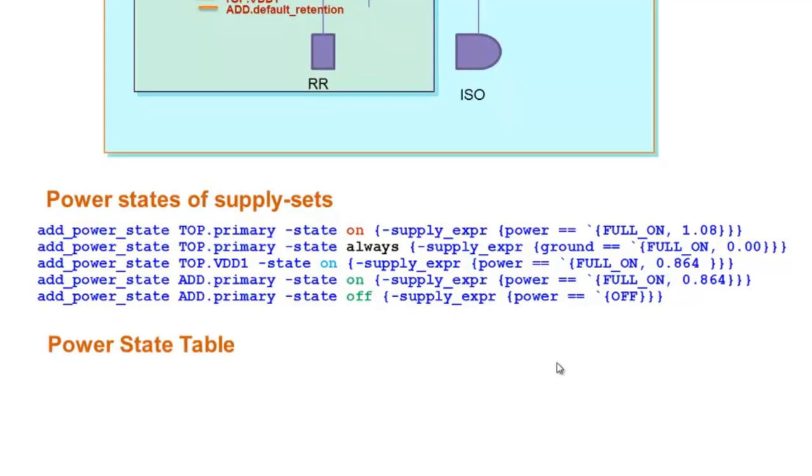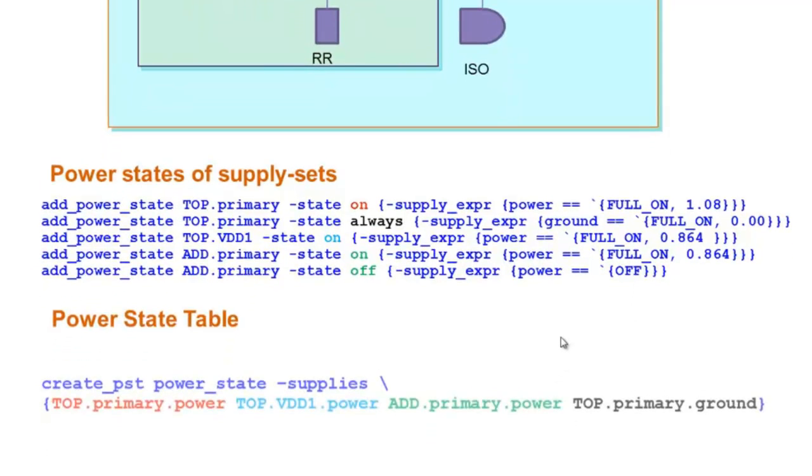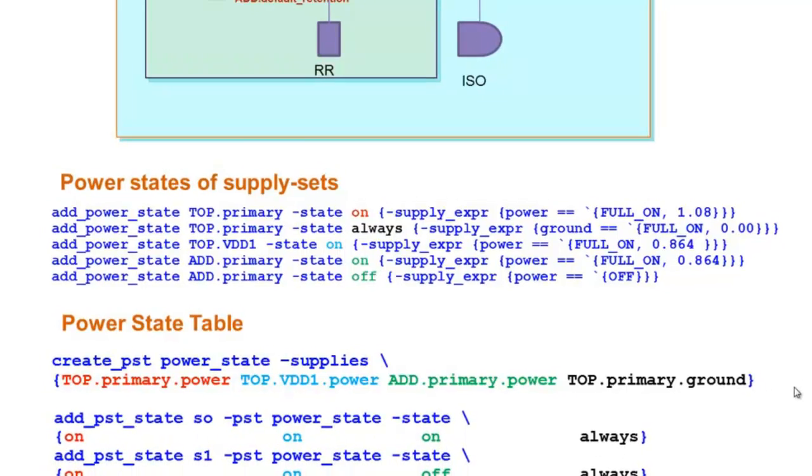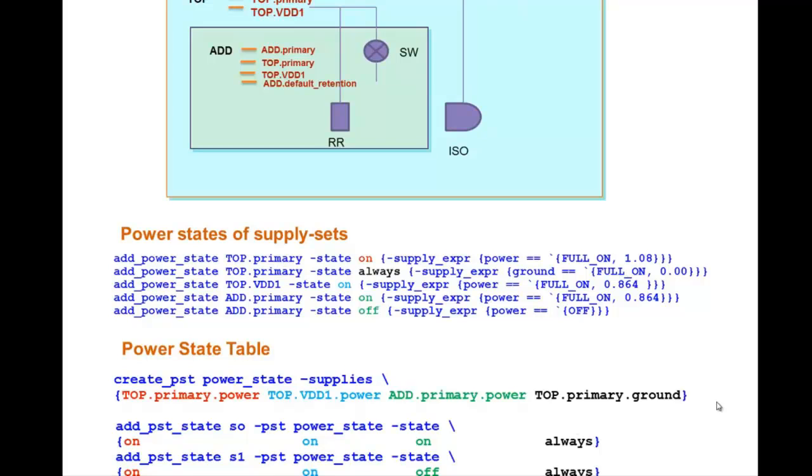The second portion is to create the Power State table. First using the CreatePST and in the Supplies list we provide all the SupplySet functions. And then we define the Power State table using AddPST state. In state S0, we can see that all the SupplySet functions are in On state. And in state S1, the Add.Primary Power is switched off.